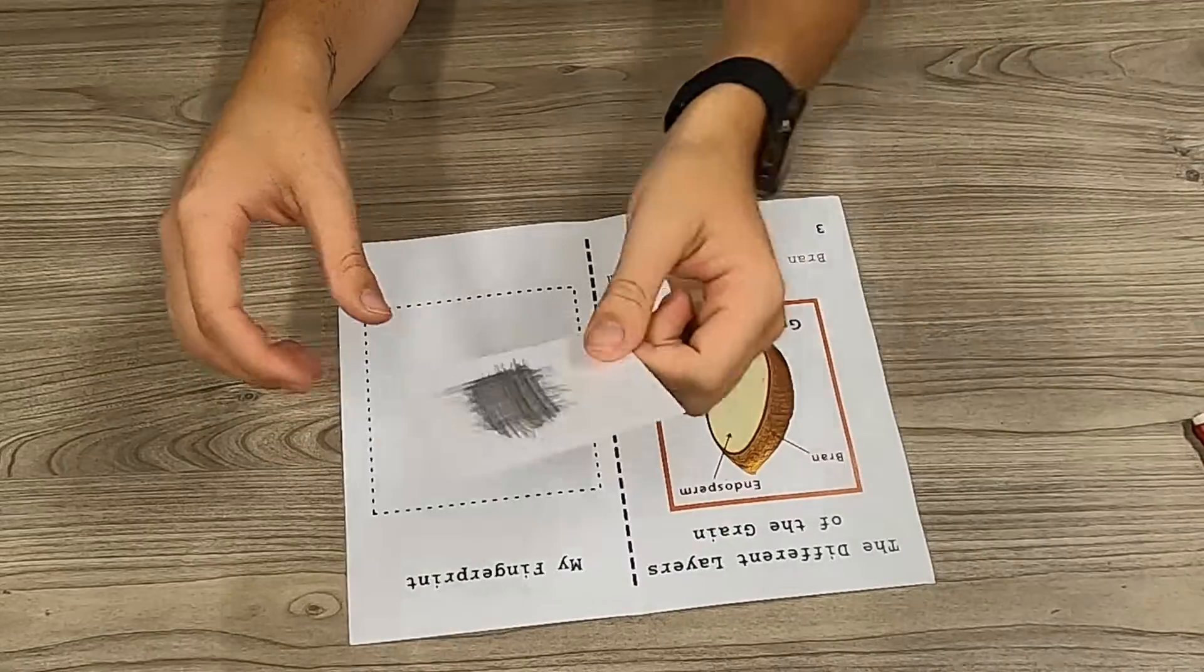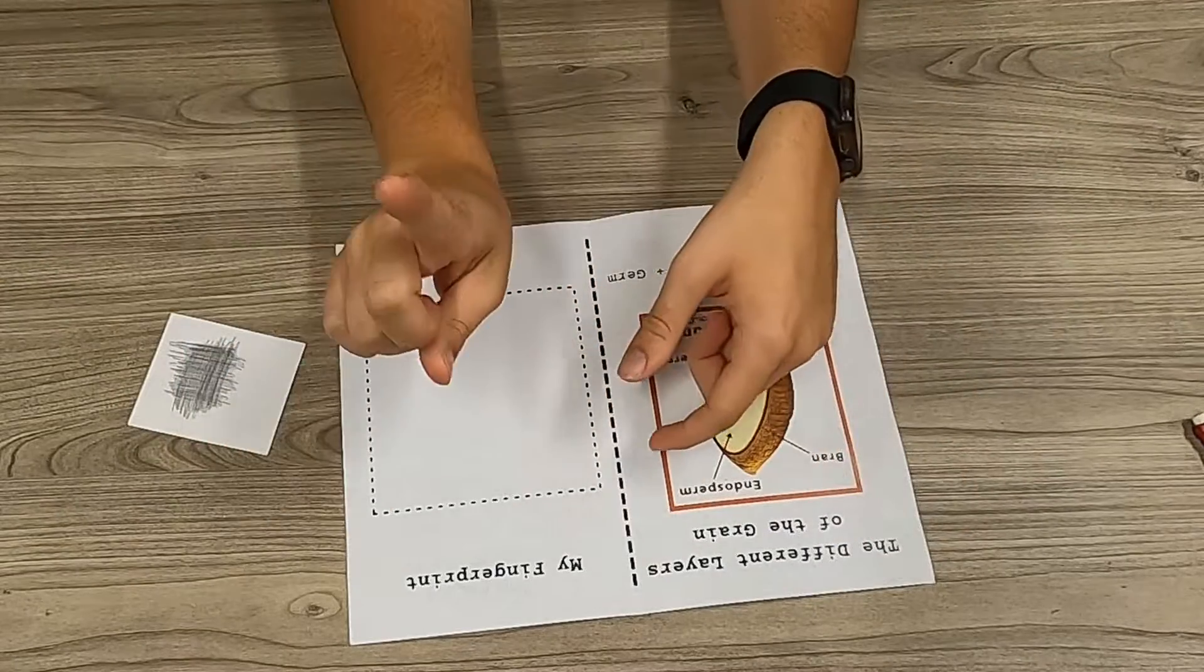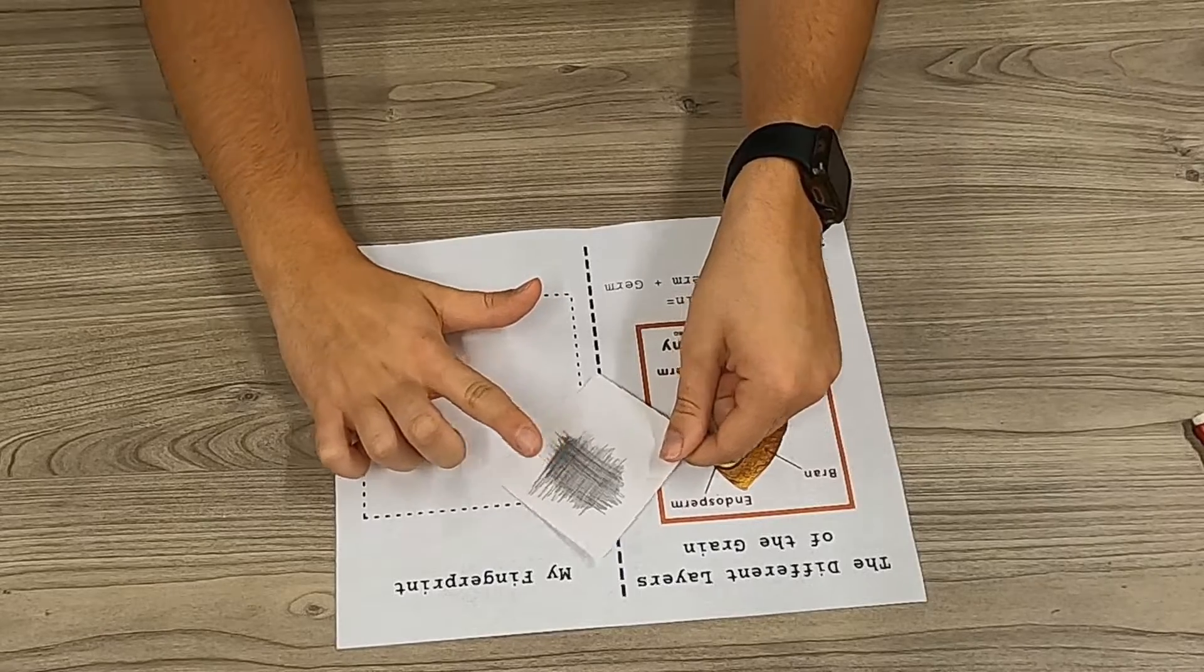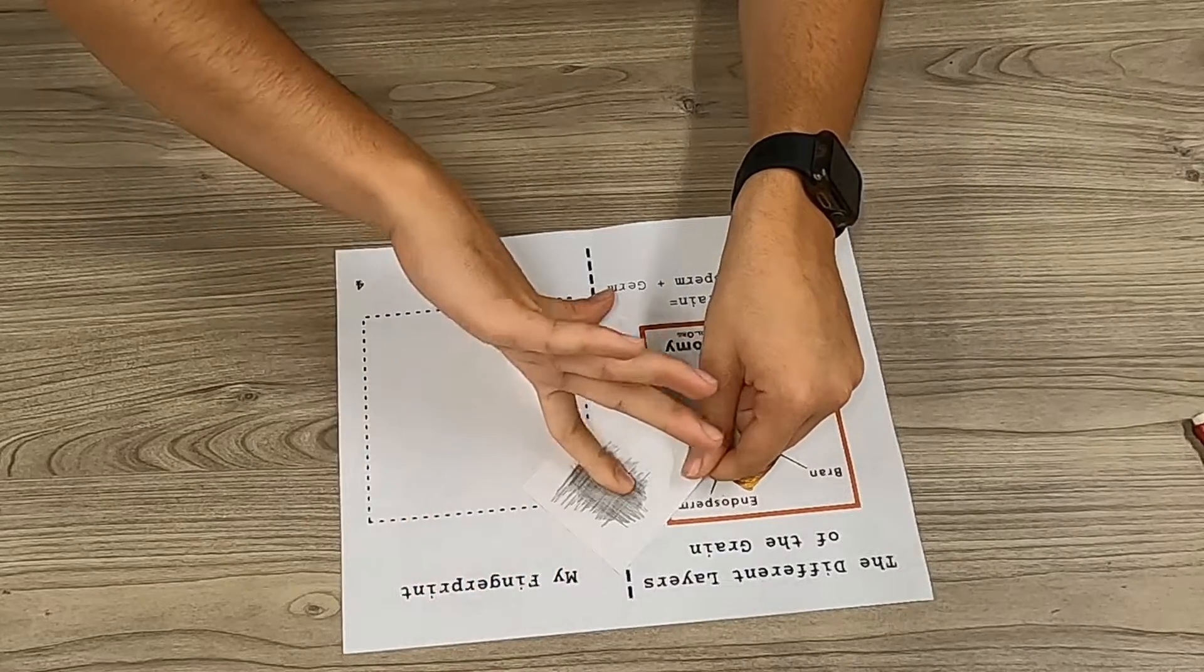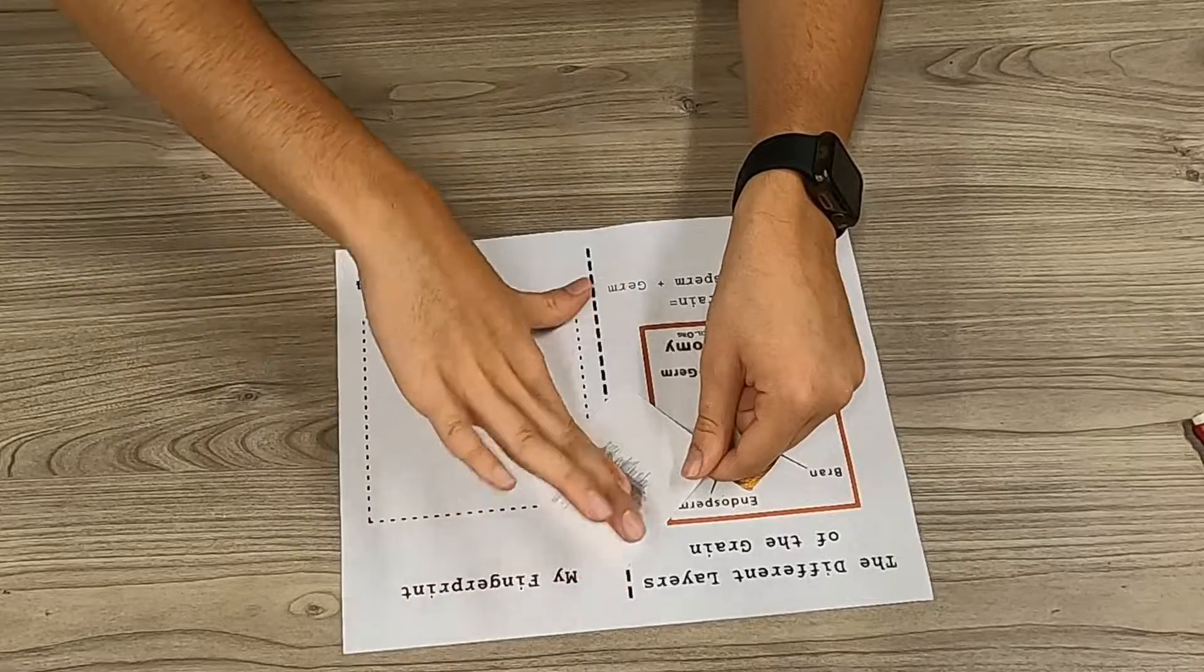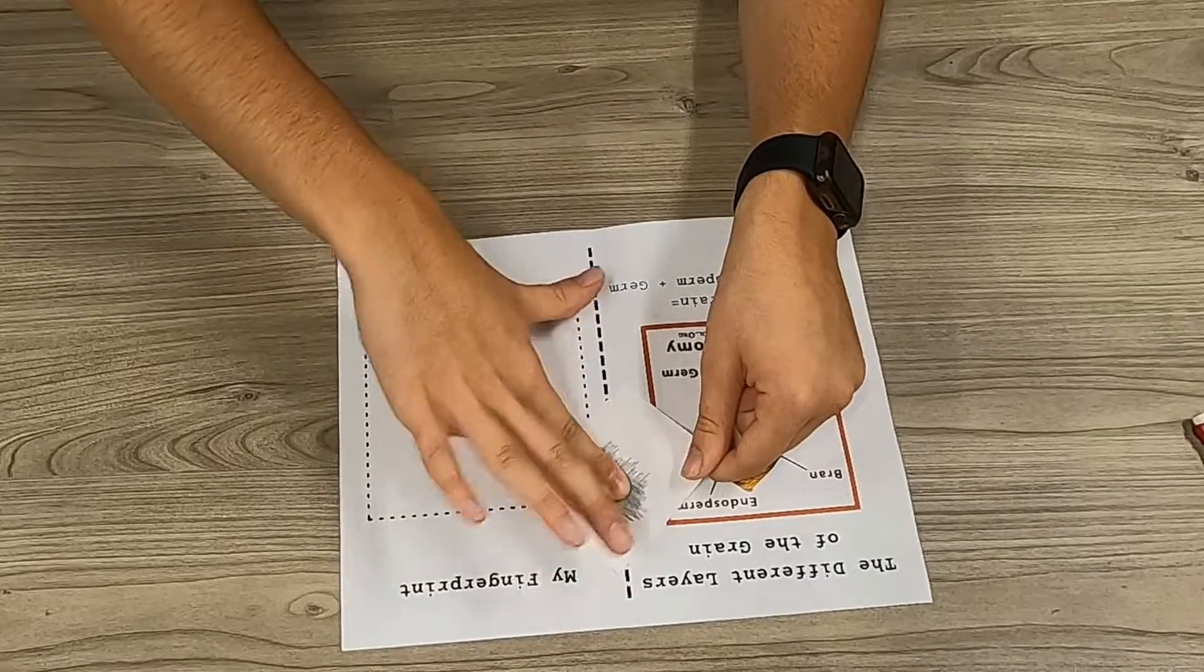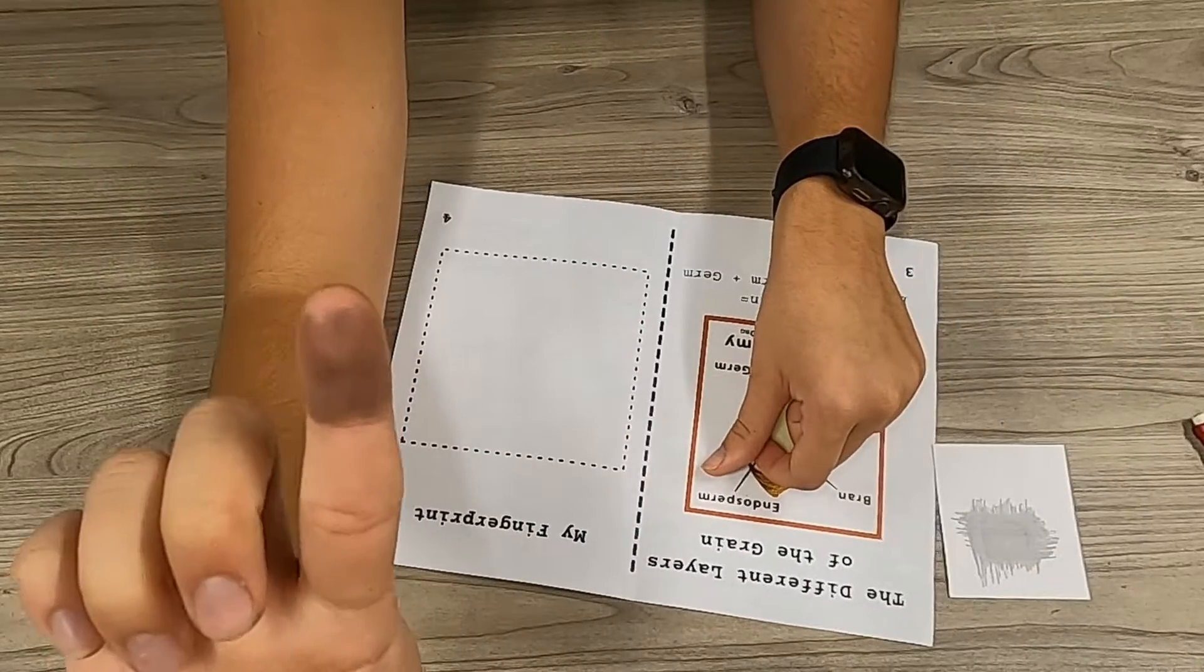Next, you're going to pick one of your fingers that you want to fingerprint. I'm going to pick my first finger. Take the note card and your finger and rub it back and forth on the note card to make sure you get a lot of the graphite onto your finger. Once you have it, you can see it's pretty dark.